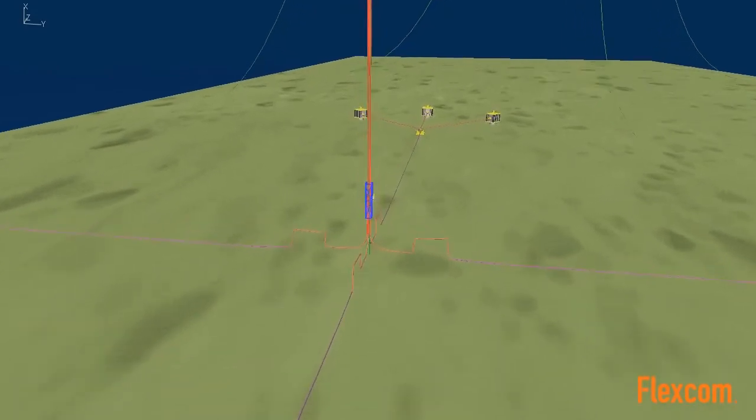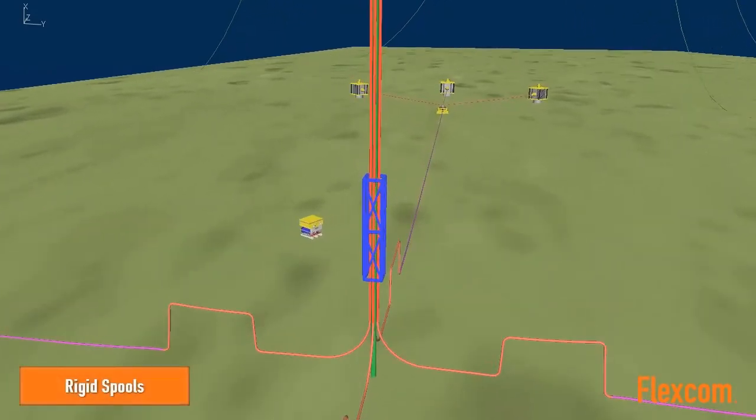Although not utilized in this model, it is also possible to model sliding contact. For example, to simulate a flexible riser passing through a J-tube.